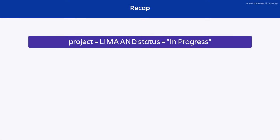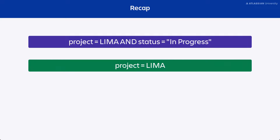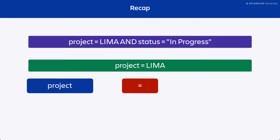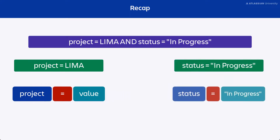To recap: a query is the statement you use to run a search. A query is made up of clauses, and each clause is made up of fields, joined by operators, and then values within that field. Multiple clauses are then joined together with keywords. To use JQL effectively, you need to understand how these parts of the query work together to provide search results.